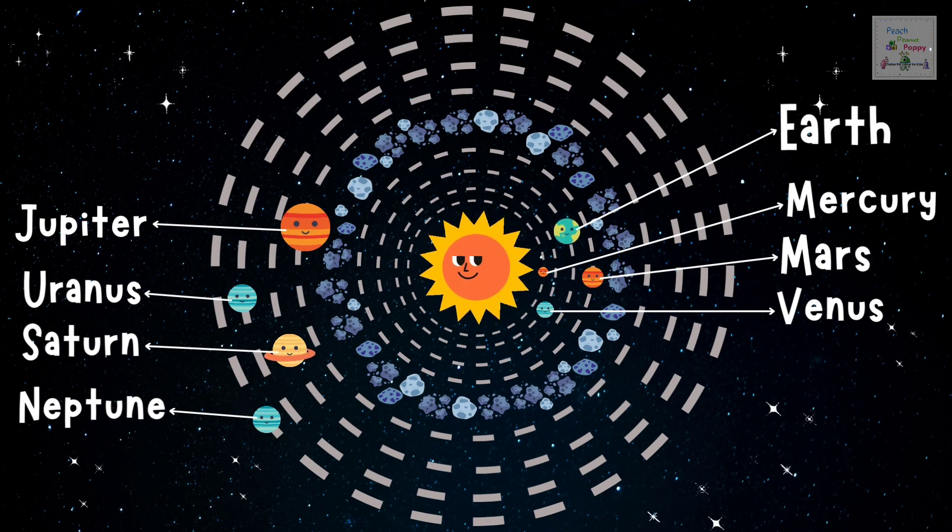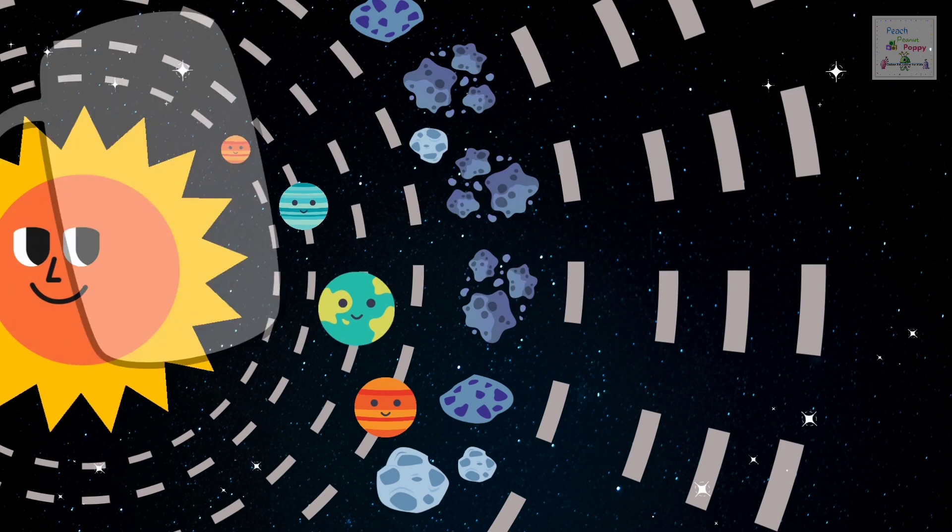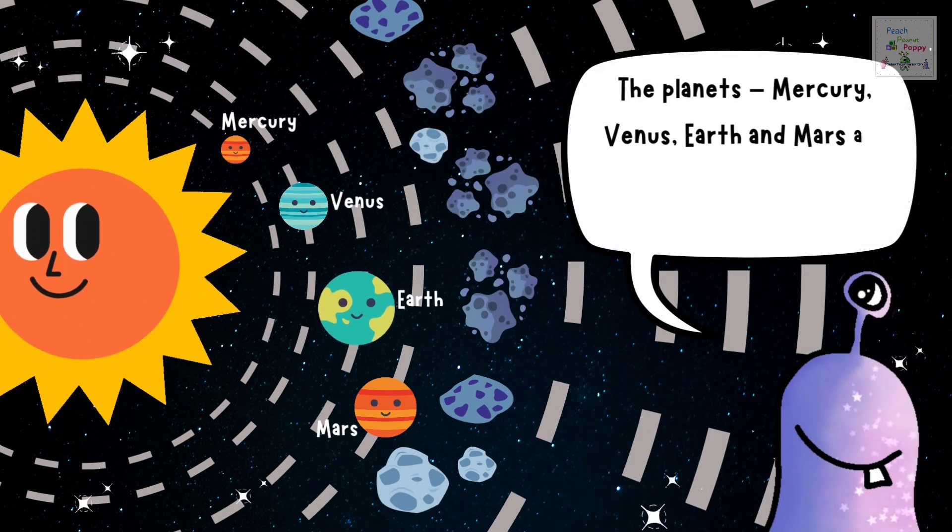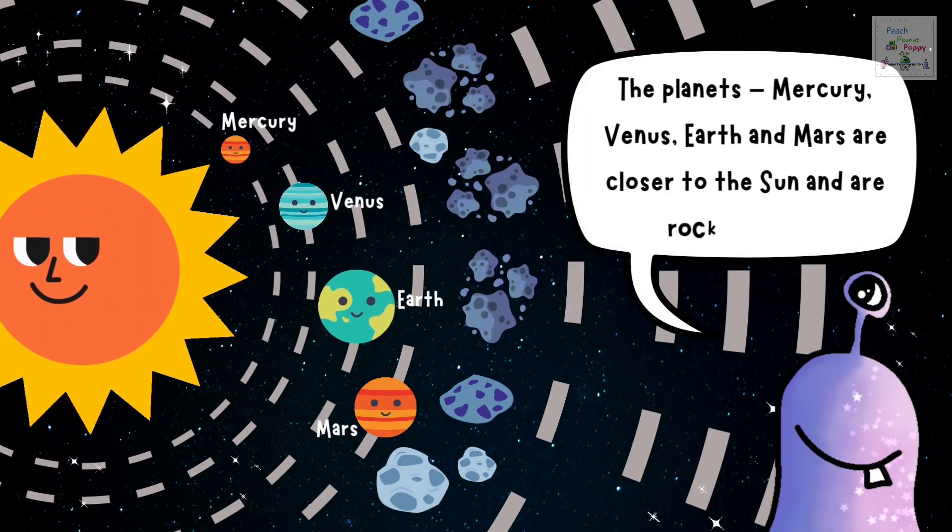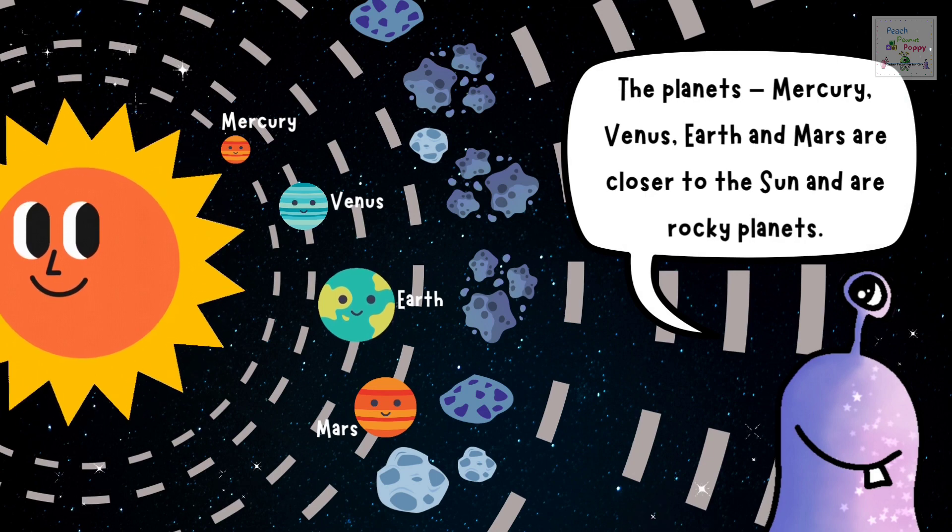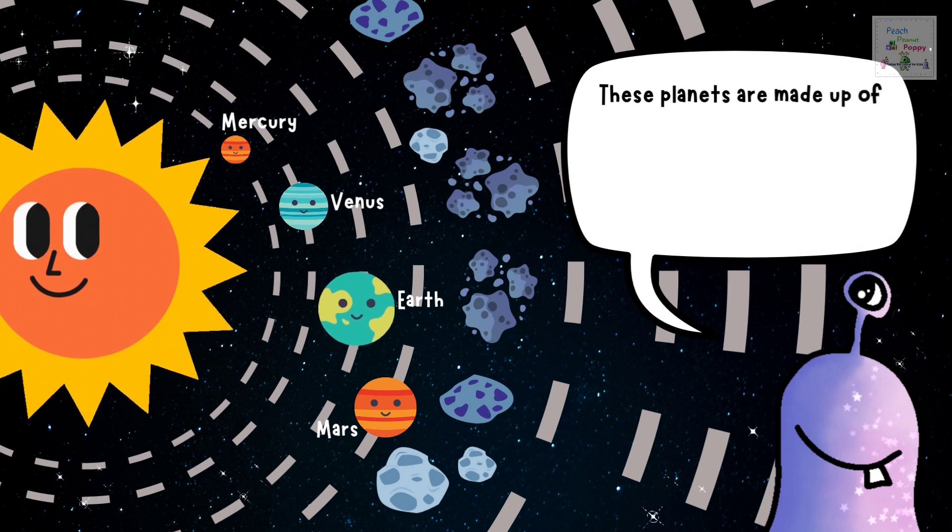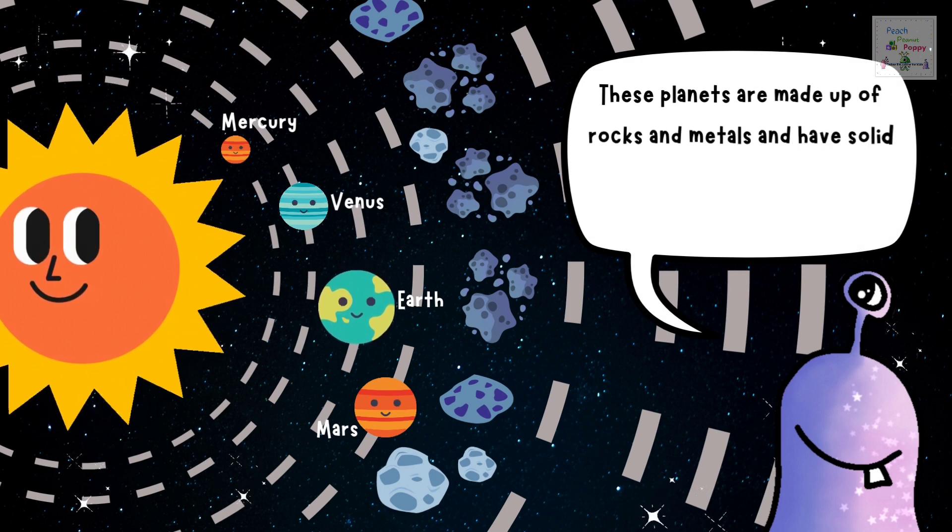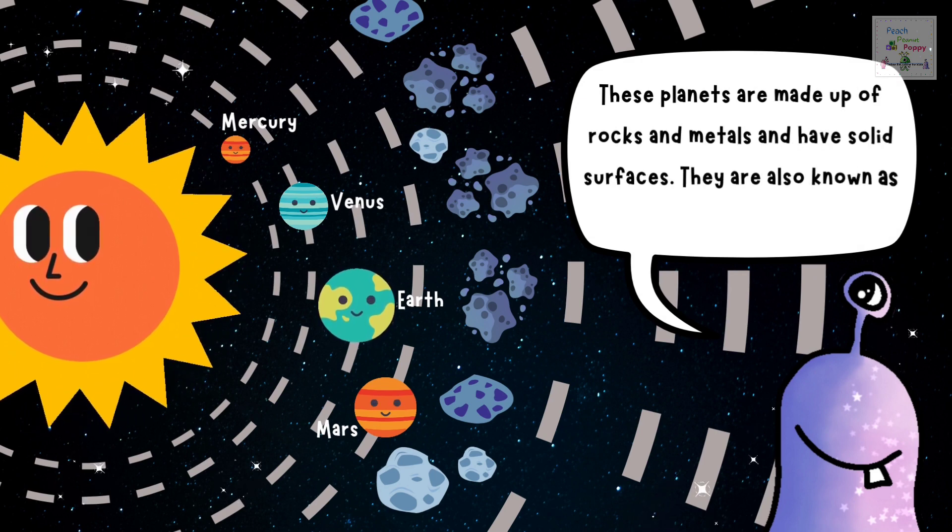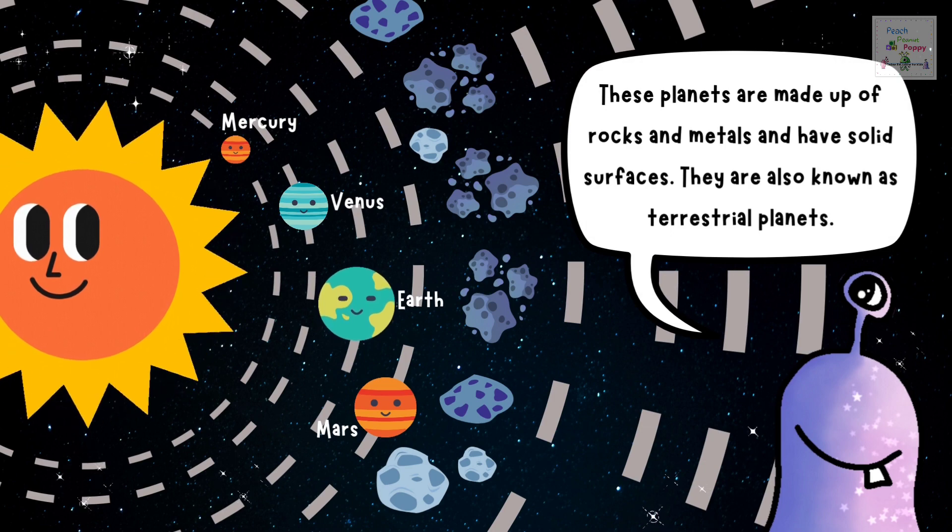Now, let's have a closer look at the planets. The planets Mercury, Venus, Earth and Mars are closer to the Sun and are rocky planets. These planets are made up of rocks and metals and have solid surfaces. They are also known as terrestrial planets.